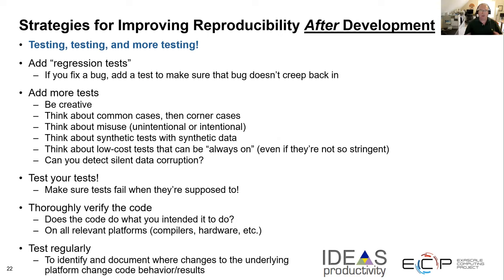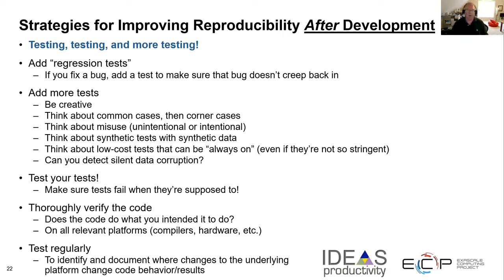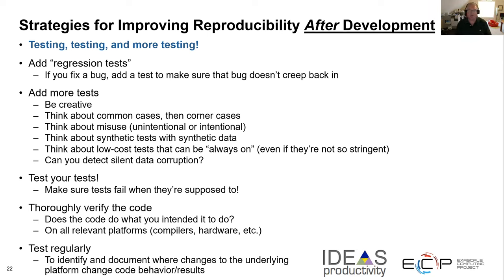After development, keep on testing and adding more tests. Anytime you have a bug, add a regression test for it to make sure that bug doesn't creep back in. Be creative — think about common cases, corner cases, and misuse of routines whether intentional or unintentional. From a physics standpoint, it's very useful to think about synthetic tests with synthetic data. They may not be real physics, but oftentimes that is the best way to exercise some of the routines you're producing — if you can construct a dataset and process it and you know what the result should look like unambiguously, that makes a good test.